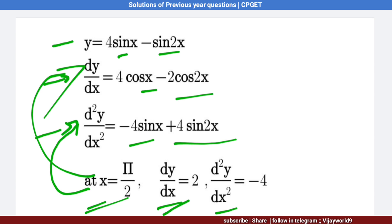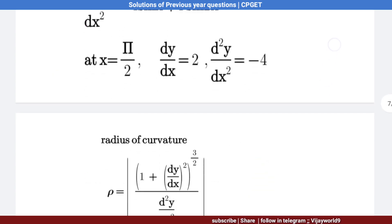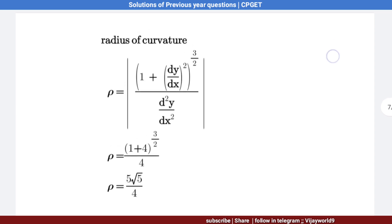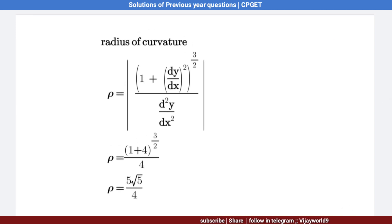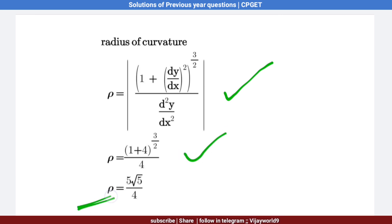Substituting into the radius of curvature formula ρ = (1 + (dy/dx)²)^(3/2) / |d²y/dx²|: ρ = (1 + 4)^(3/2) / 4 = 5^(3/2) / 4 = 5√5 / 4.